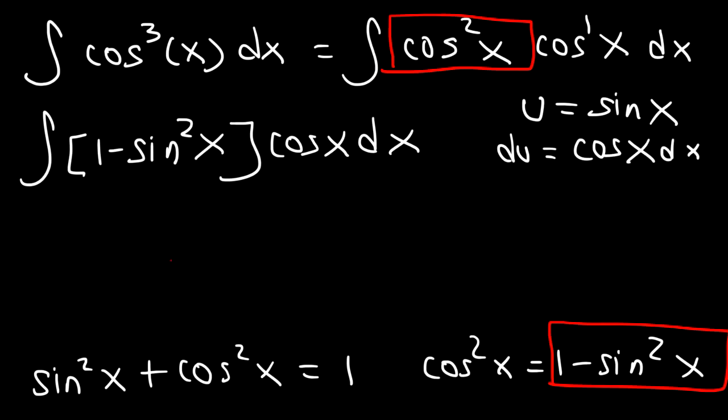So, we can replace cosine x dx with du, since du is equal to cosine x dx. Now, let's replace sine with the u variable. So, this is going to be 1 minus u squared times du.